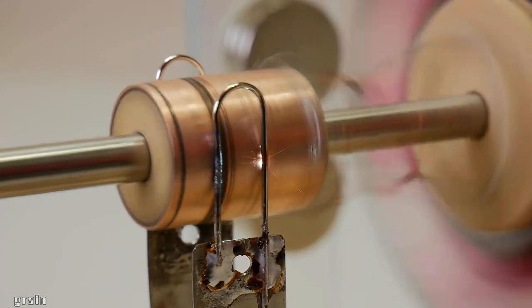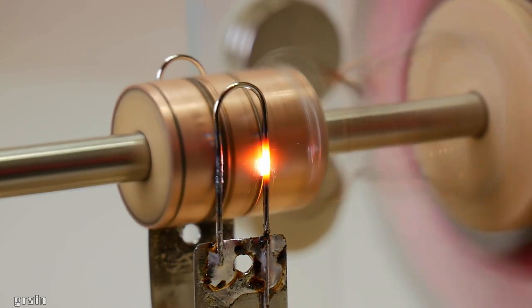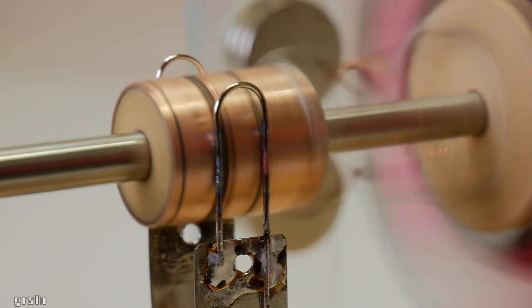With chrome brushes the engine ran a little longer, but at currents of 3-5 amperes, the brushes and the collector also burn and heat up.